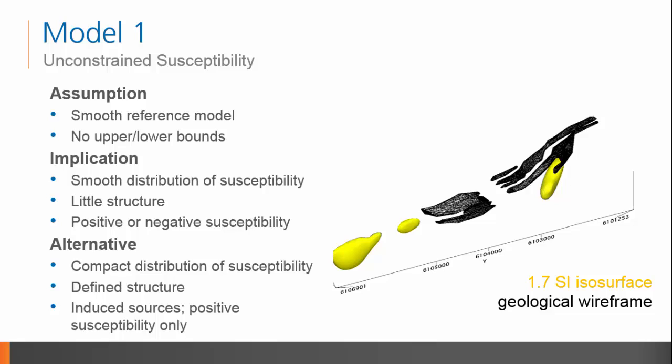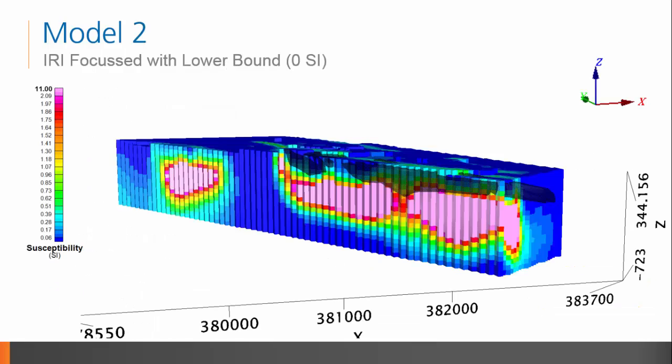Furthermore, we can postulate that the iron formation has induced magnetization only and has a susceptibility greater than the sedimentary host rocks and the background we removed. Therefore, we can expect positive susceptibilities only. Since we expect the target iron formation to be compact in structure and the susceptibilities within the volume to be positive relative to the background, we enforce a lower bound of 0 SI and apply iterative reweighting inversion focusing, or IRI focusing, in model 2. The result is a model that is consistent with the finite structure hypothesized for the iron formation and the assumption that the susceptibility within the model is positive only.